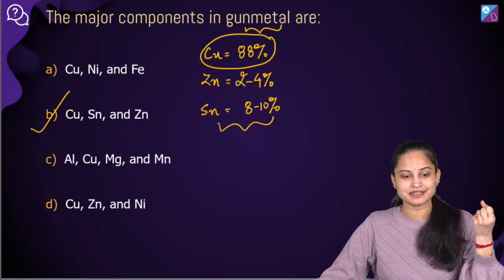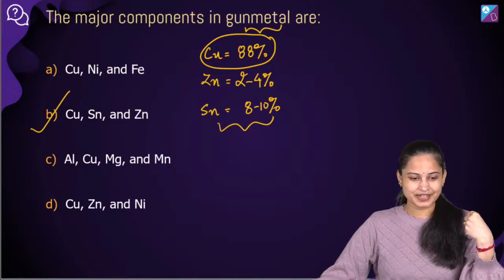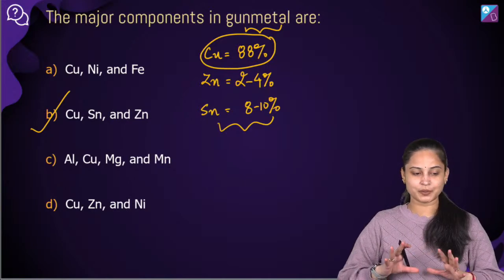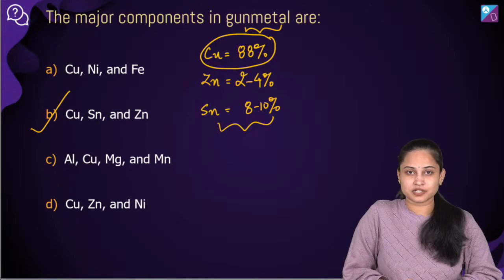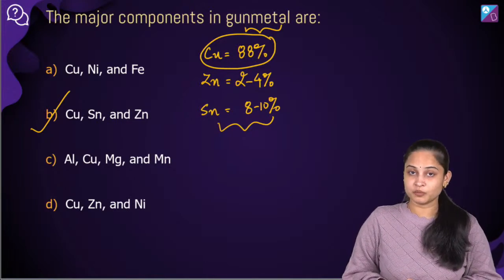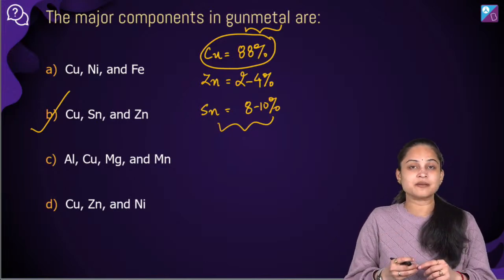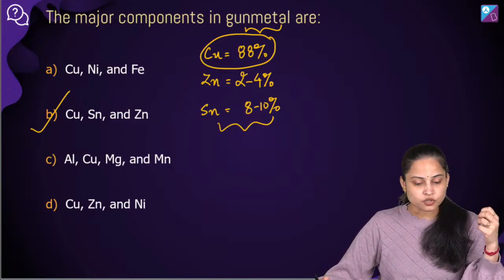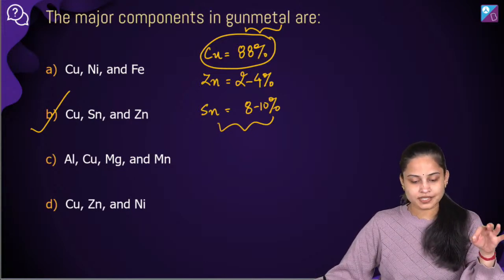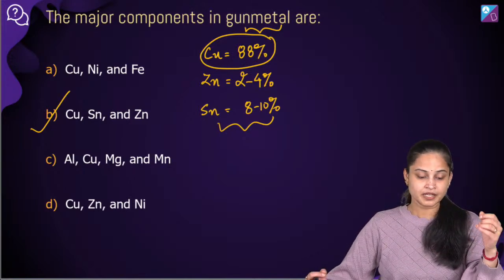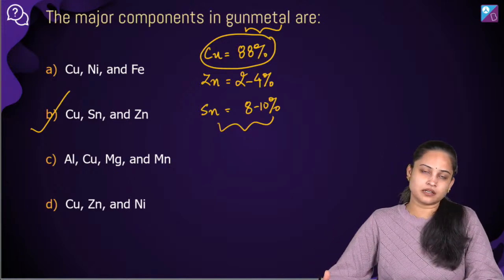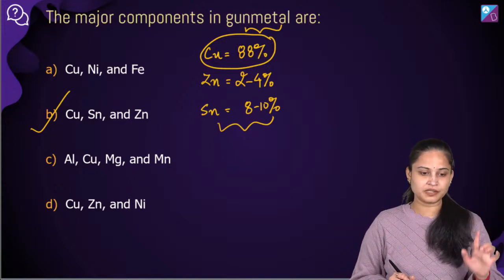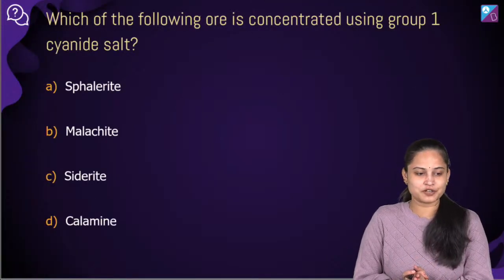Gun metal can withstand atmospheric steam and salty water corrosion, so it is highly suitable for making pump parts, valves, and steam fittings. Option number B is the right answer. Moving ahead, let's talk about the second question: which of the following ore is concentrated using group one cyanide salt?